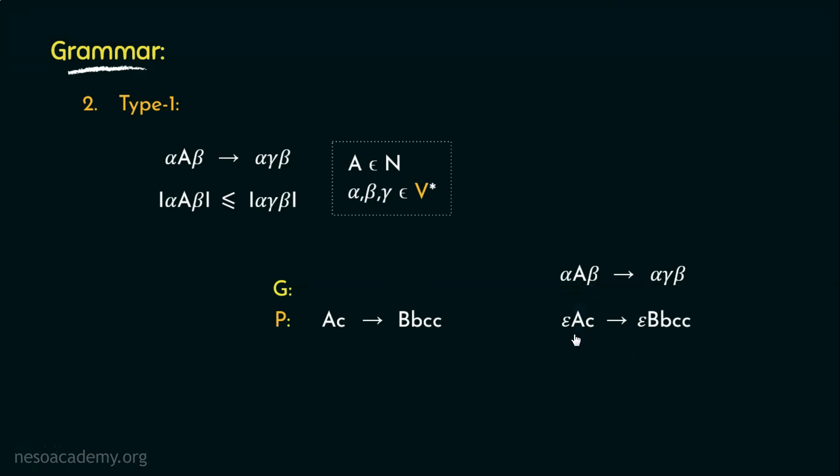Now, the non-terminal A is actually generating capital B followed by small b and c. Basically, capital A is deriving capital B small b small c. However, it can only derive this if the right context is small c. So, context has a strong impact in here. This is the reason why type 1 is called context sensitive grammar.